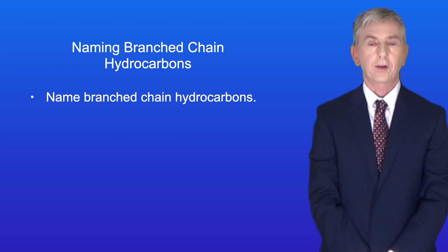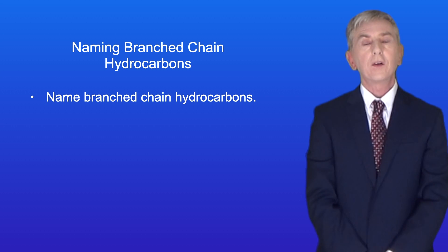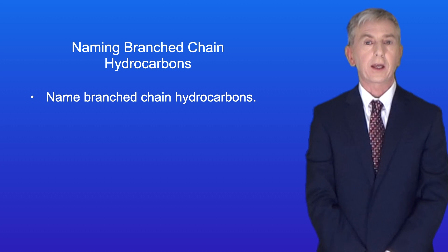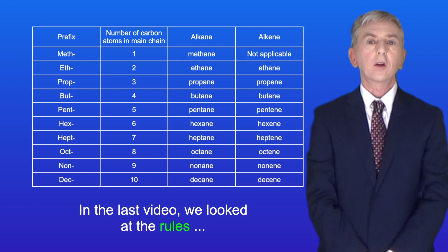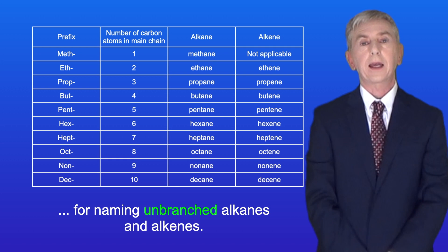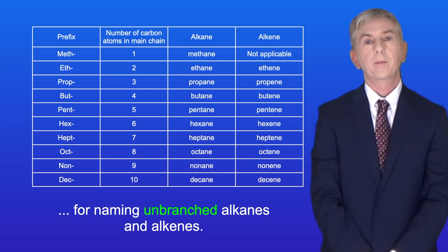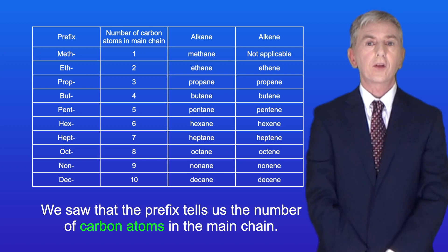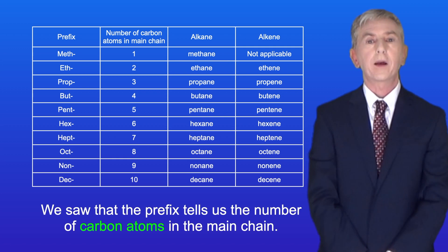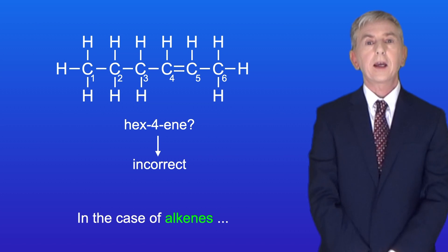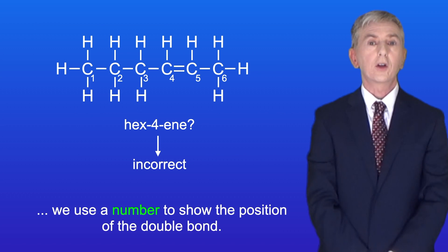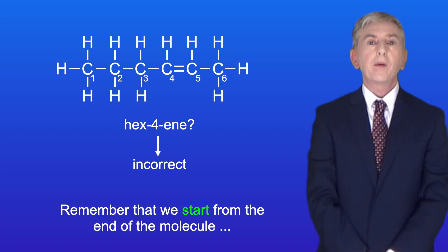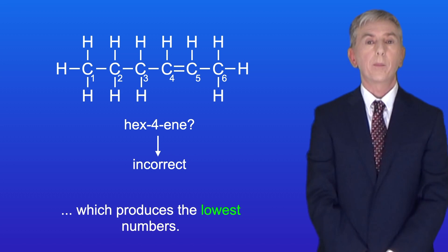Hi and welcome back to Free Science Lessons. By the end of this video you should be able to name branched-chain hydrocarbons. In the last video we looked at the rules for naming unbranched alkanes and alkenes. We saw that the prefix tells us the number of carbon atoms in the main chain, and in the case of alkenes we use a number to show the position of the double bond. Remember that we start from the end of the molecule which produces the lowest numbers.